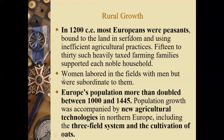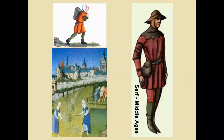Europe's population more than doubled between the year 1000 and 1445 CE. This was due to better farming technology and methods that led to more food, which caused the population to increase. Serfs' clothing was very drab, and women worked alongside men in the fields.